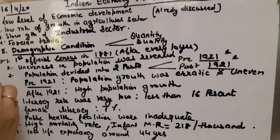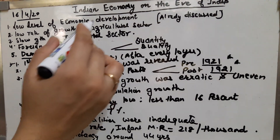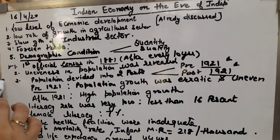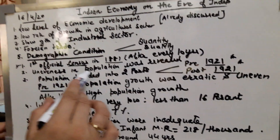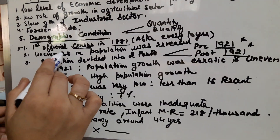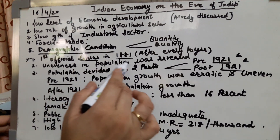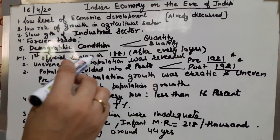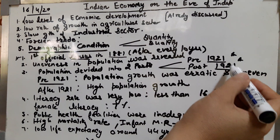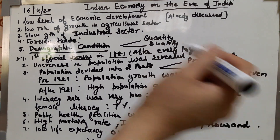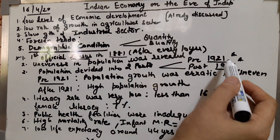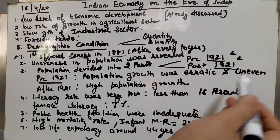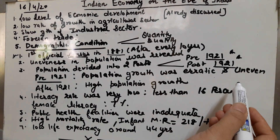Now we are discussing the features of demographic condition at the time of independence — how was our population at that time? The first thing is the pattern observed was very uneven, meaning population growth was high at times and very low at others. For estimation purposes, we take 1921 as a dividing year, also called the year of great divide, which divides population into two parts: before 1921 and after 1921.